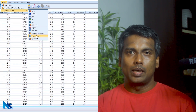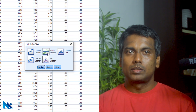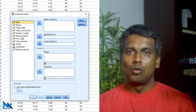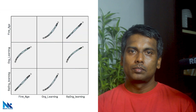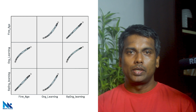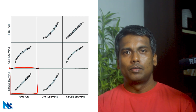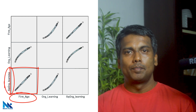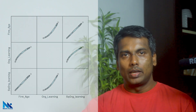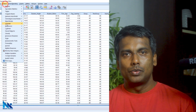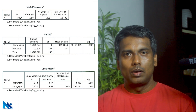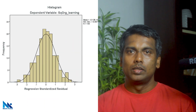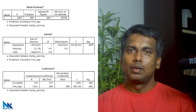Let's generate a matrix of scatterplots for easy comparison. Click Graph, Legacy Dialogs, then click Scatter. In the dialog box, select Matrix Scatter. Then move firm age, organizational learning, and the transformed squared organizational learning variable into matrix variables, and click OK. Now we can see a matrix of scatterplots showing each possible pair of variables. Here we can see that firm age has a linear relationship with squared organizational learning, compared to its nonlinear relationship with organizational learning. When we introduce the squared organizational learning into the regression, not only are the model and coefficients statistically significant, but the residuals are approximately normally distributed, implying these results are more reliable.